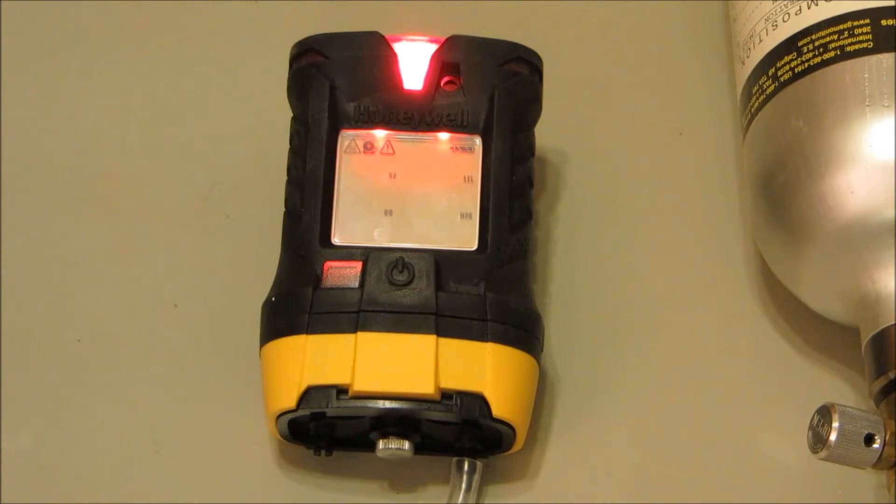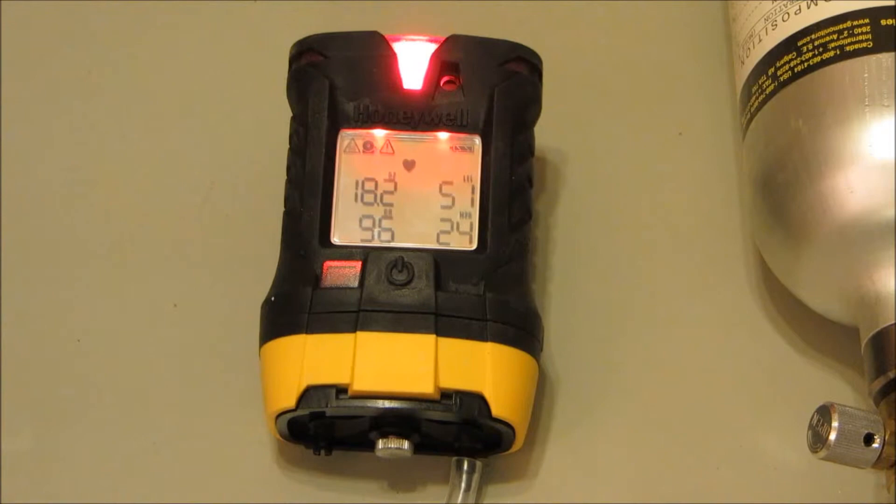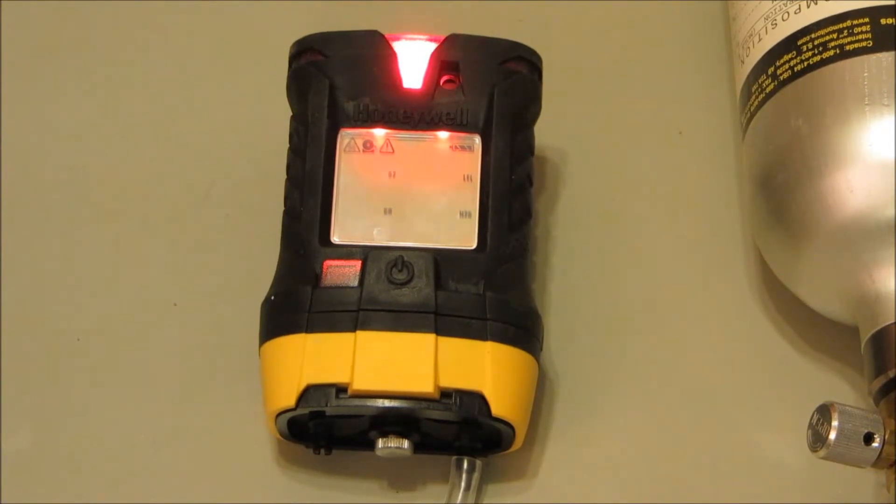All four sensors go into alarm. To check for accuracy, allow 45 seconds to one minute for stabilization of sensors for response. The readings should be 90% to 120% of gas applied.